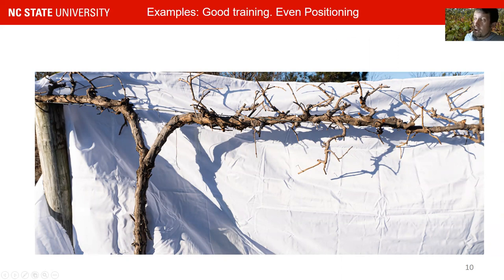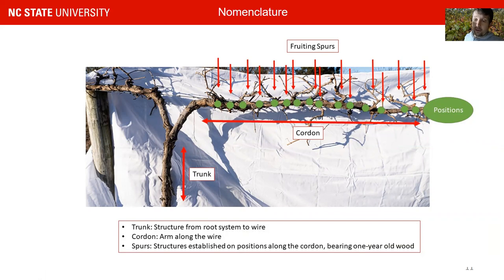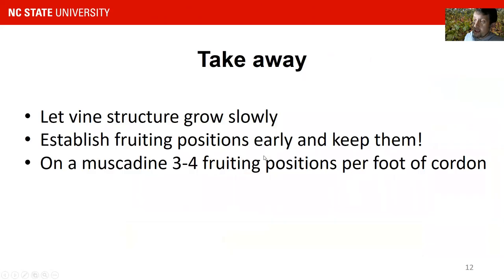But what you also have here is very equally established positions and very slow-growing positions with the exception of one or two. Every one of those positions is growing very slowly, which means you do not have to make a lot of big cuts over the lifetime of this cordon. Just to go over terminology: trunk is this part of the vine, cordon is this, and the fruiting spurs are established at your fruiting positions. The muscadine vine can have quite a bit of fruiting positions — we usually talk about three to four fruiting positions per foot of cordon. We really want the vine to develop those structures slowly and establish fruiting positions early and keep them.